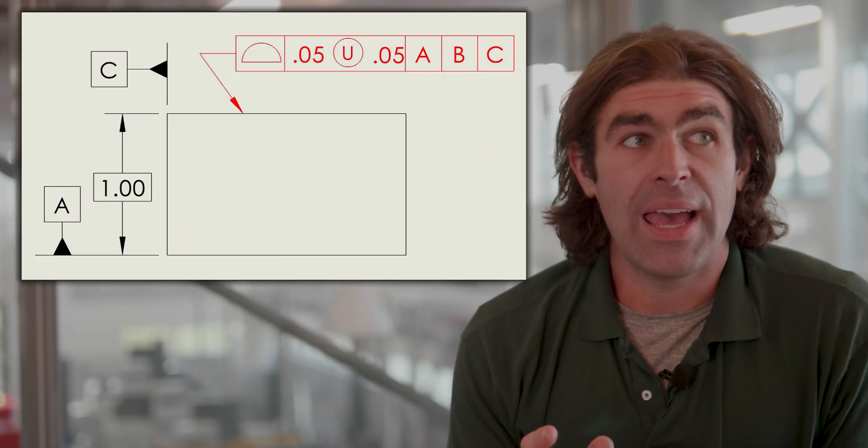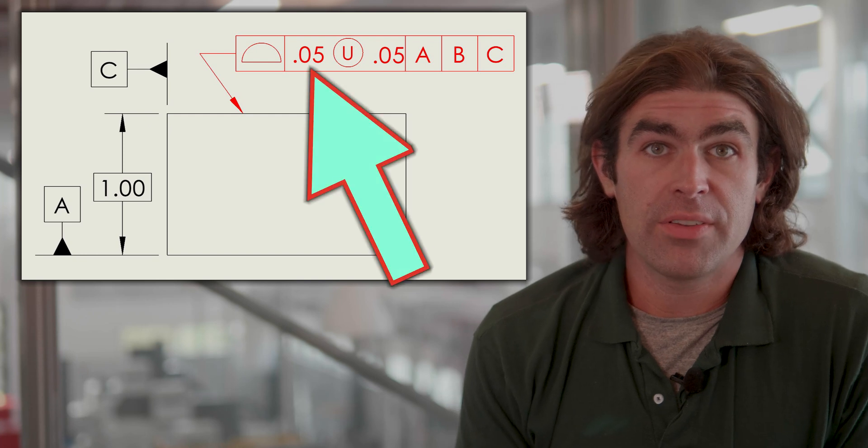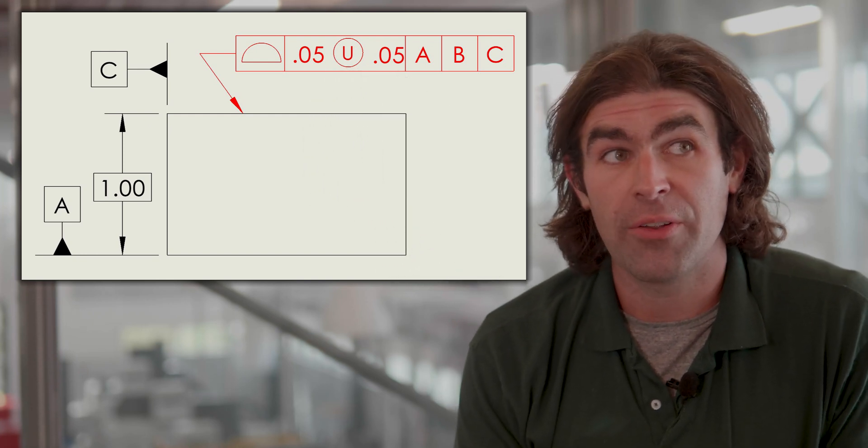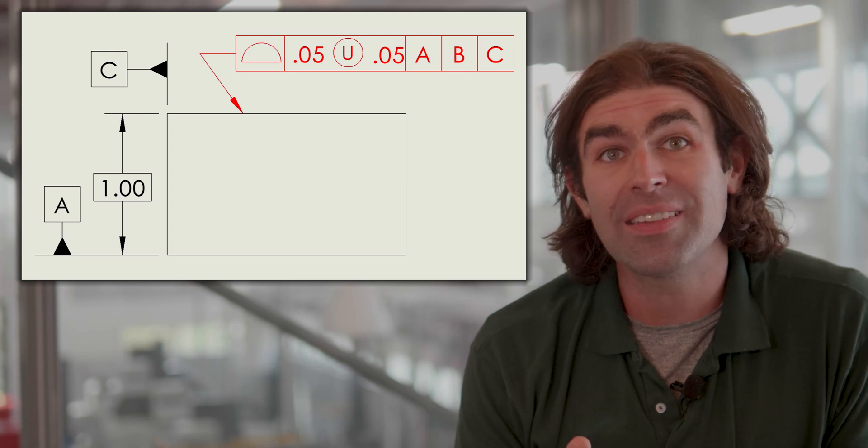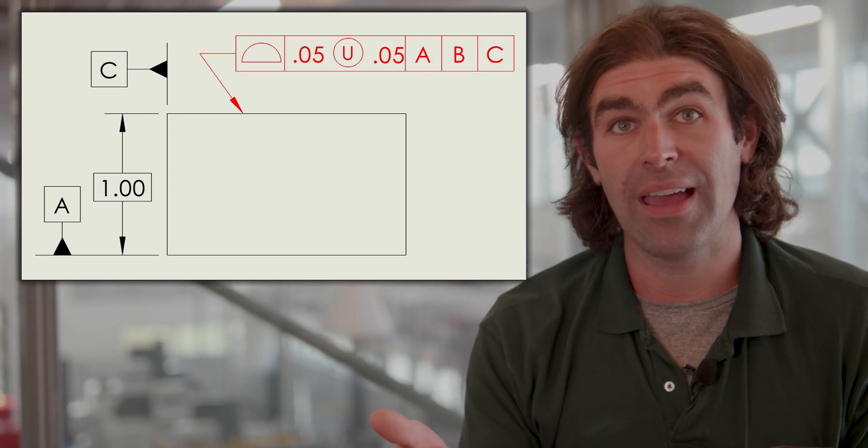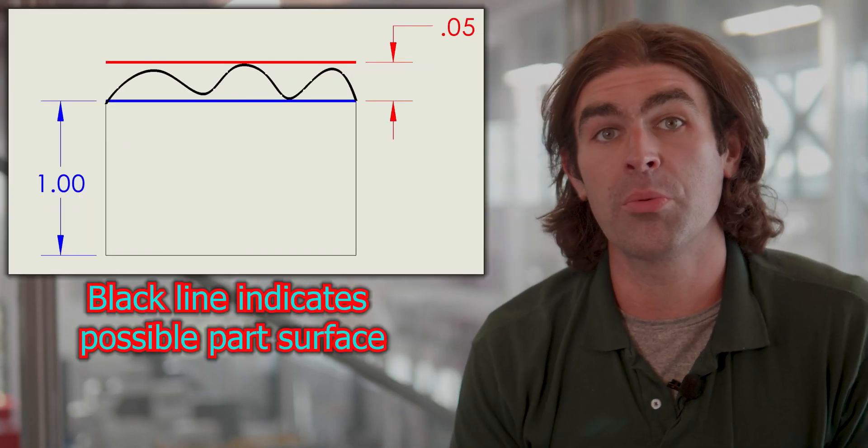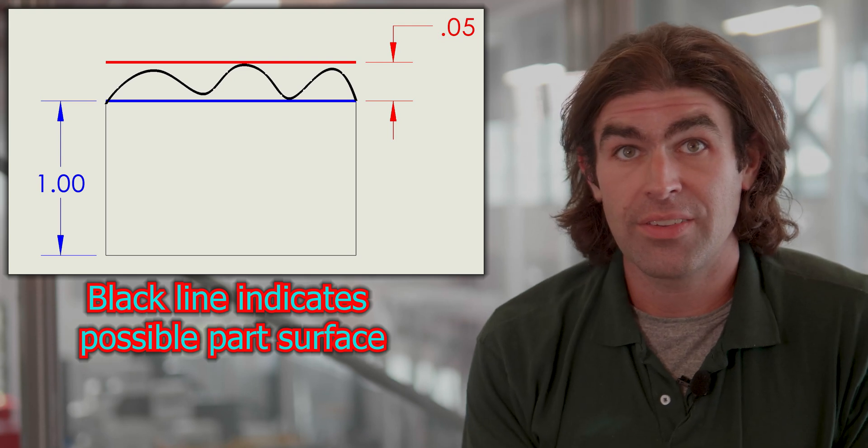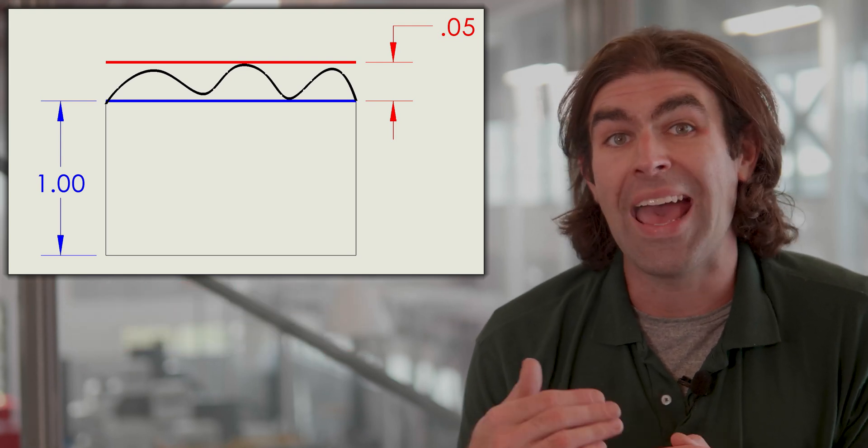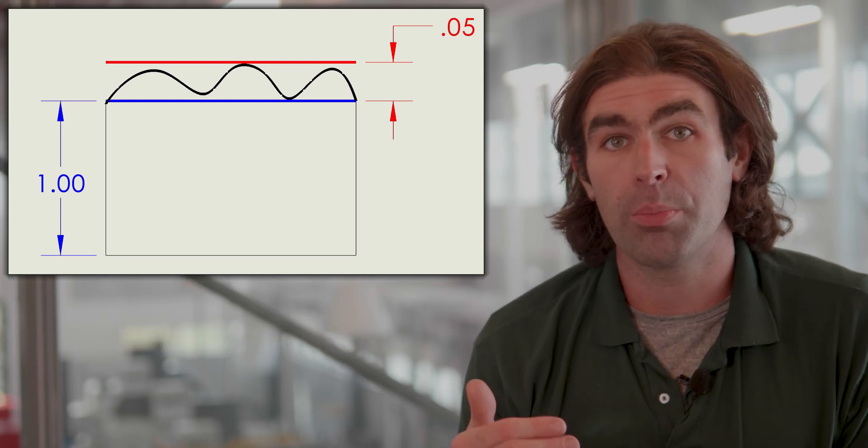So for an external feature, the way to read it is that that number indicates how much of the tolerance would add to the part. Here's an example. If you have a tolerance of 50 thousandths, the U symbol, 50 thousandths after the tolerance, this is indicating that the tolerance zone is entirely outside of the true profile. That 50 thousandths goes in the direction that would add material to the part.